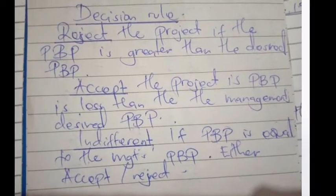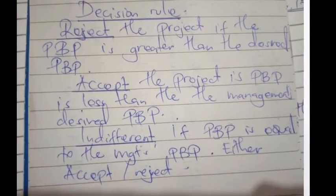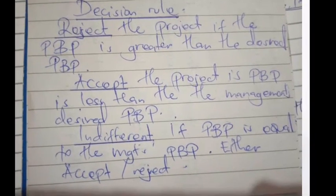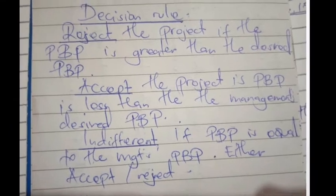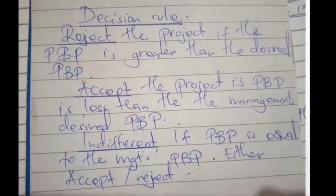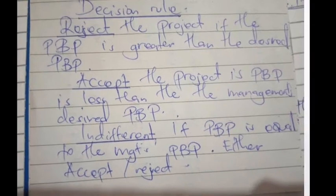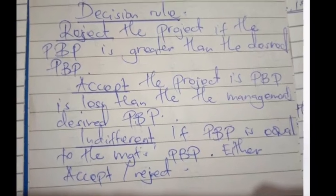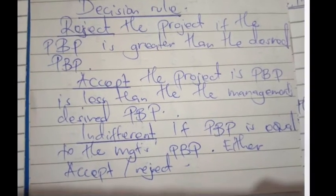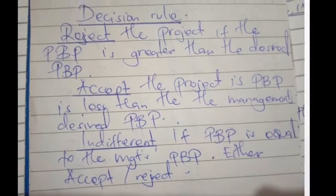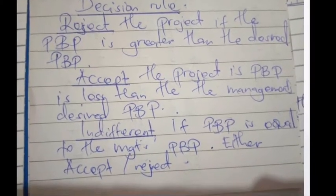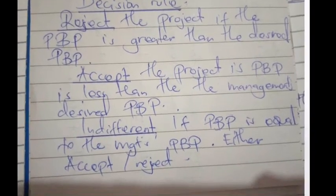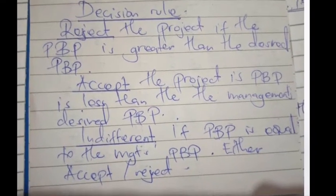Now let's look at the decision rule for payback period. When the payback period obtained is greater than the desired payback period, we reject the project. When the payback period is less than the management's desired payback period, we accept the project. When the payback period equals the desired payback period, you can either accept or reject — that is the decision rule for payback period.